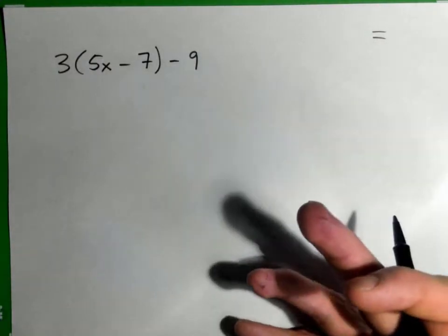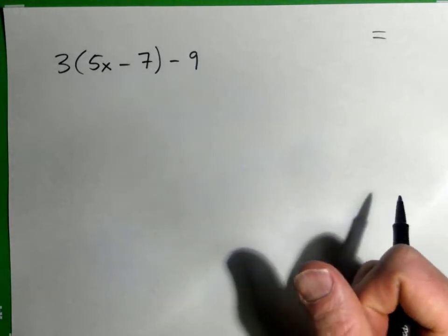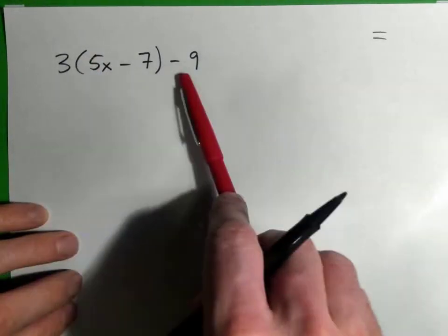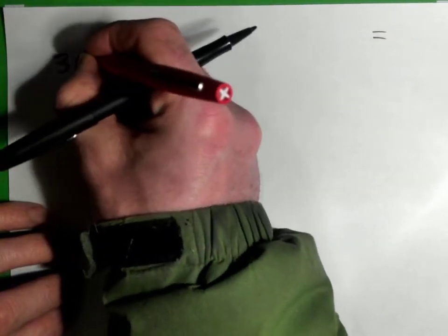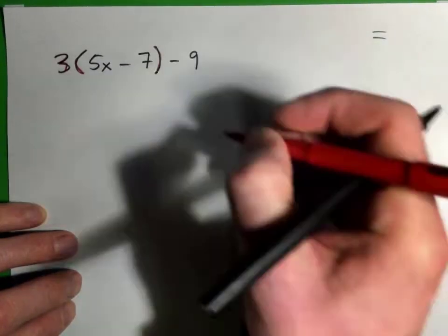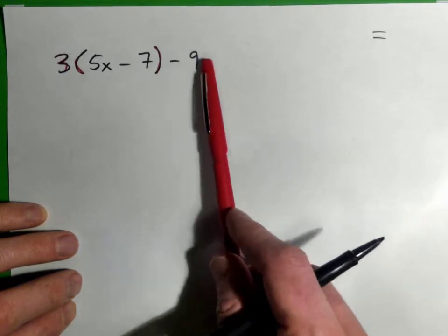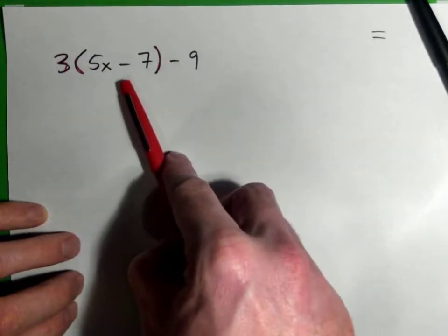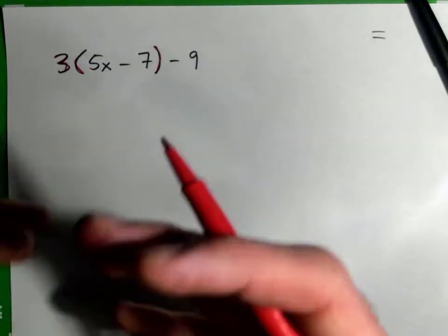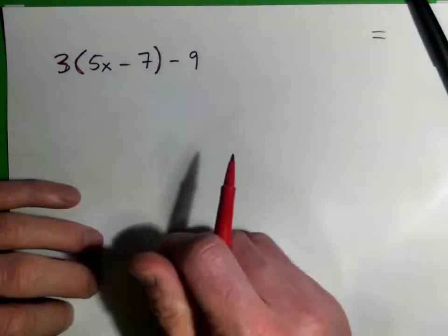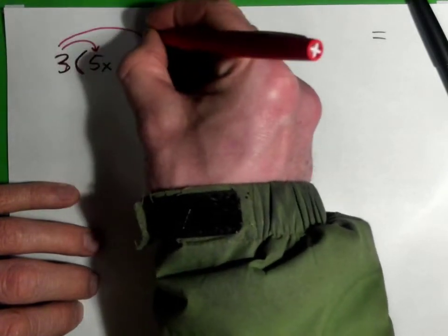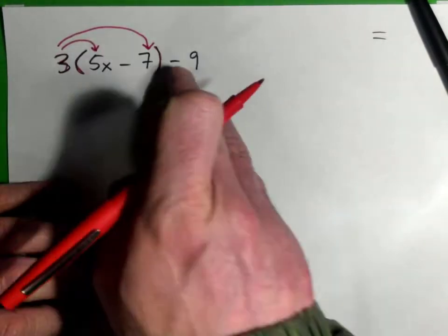We've got a multiplication going on here because we have a 3 sitting right beside a parenthesis, then we have a subtraction, subtract 9. We want to get rid of these parentheses first so that we can then add like terms. We're going to use the distributive property and multiply that 3 in here to see what we get.